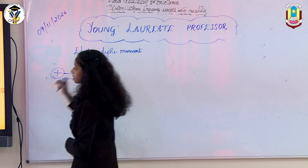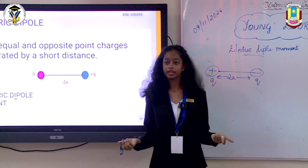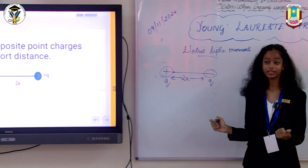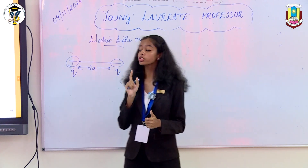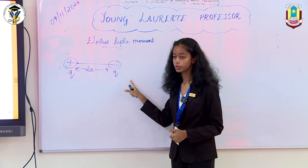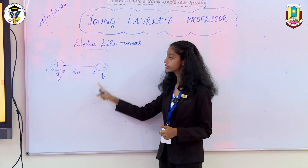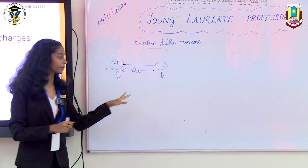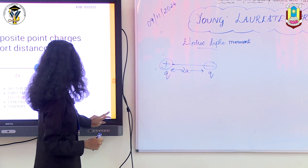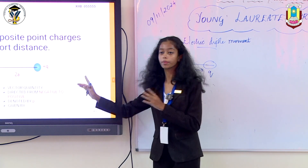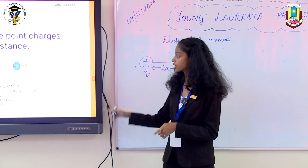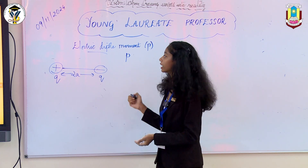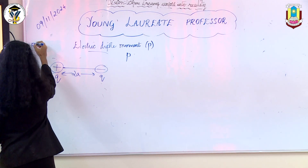Next, let's move to electric dipole moment. What is electric dipole moment? Electric dipole moment is a vector quantity — that is very important. It is a vector quantity used to indicate the strength of an electric dipole. It is directed from the negative charge to the positive charge, and it is denoted by the letter P.